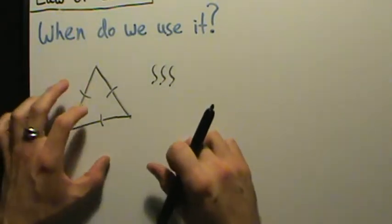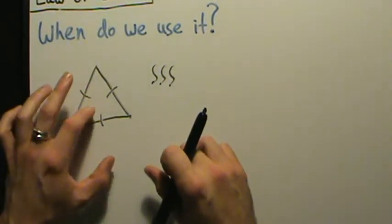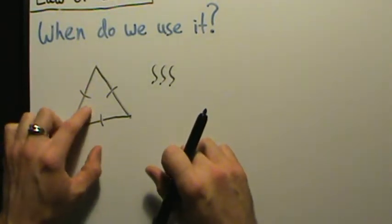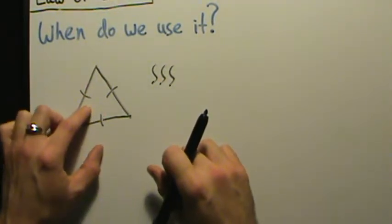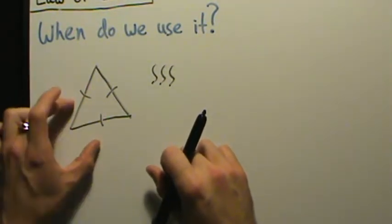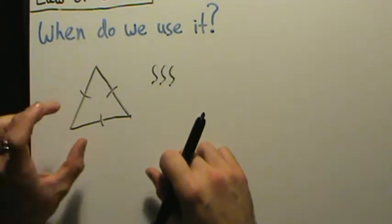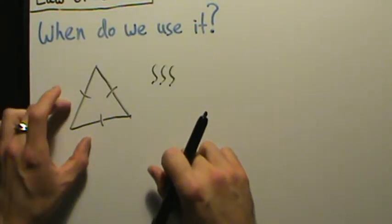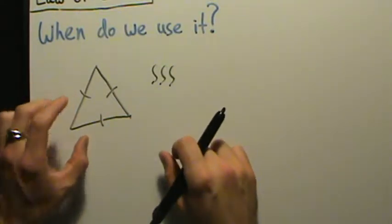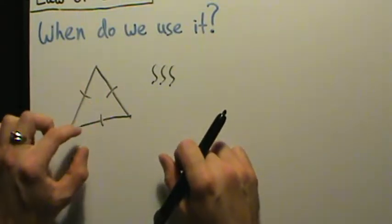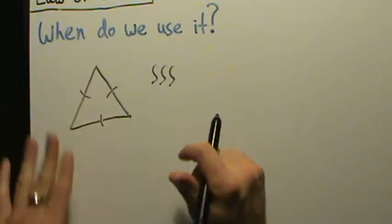By the way, even though I drew this acute triangle, whether the triangle is acute, obtuse, or right, as long as you have all three sides, you can use the law of cosines.